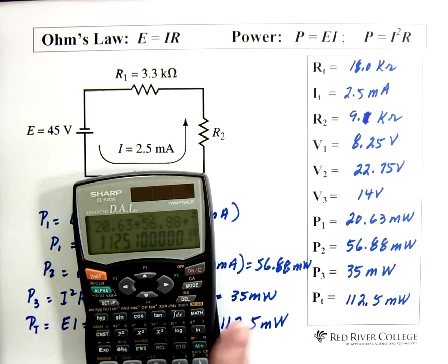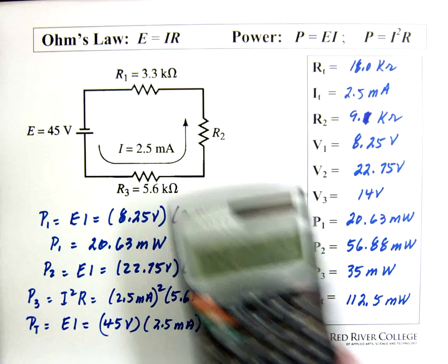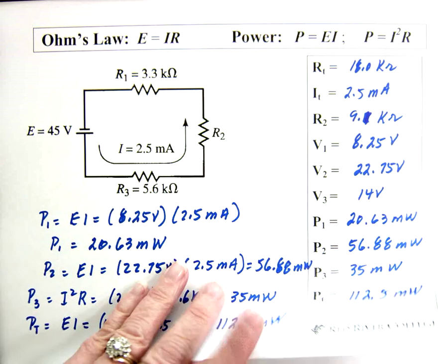Plus 56.88 plus 35 equals hopefully. Yeah, there you go. 112.51 milliwatts. That's close enough. So we've done a good job here. And that's solving for a circuit when you have an unknown resistance.